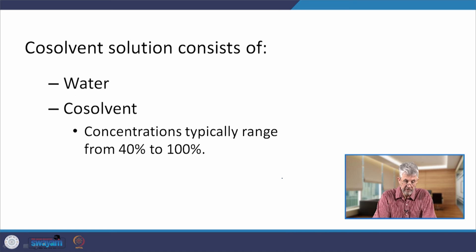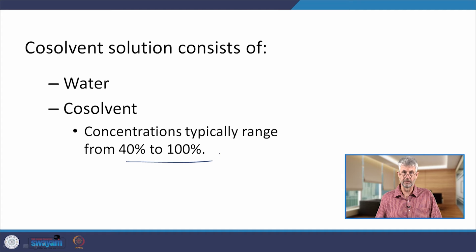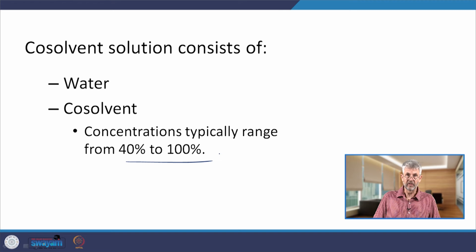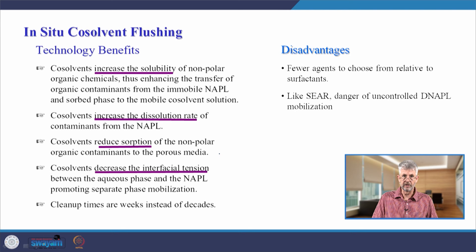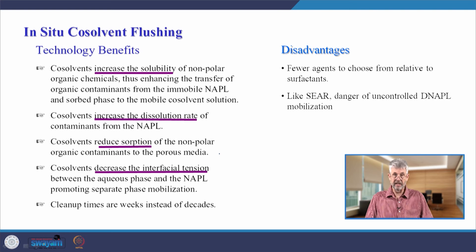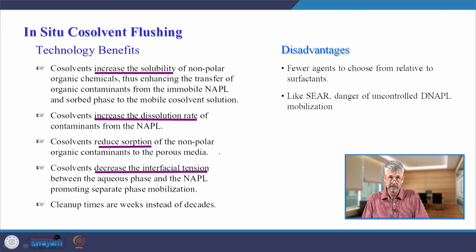A co-solvent solution typically consists of water and a co-solvent at concentrations ranging from 40 to 100 percent — 100 percent would be pure ethanol or pure isopropyl alcohol. Depending on the site and the speed required for cleanup, you can increase the co-solvency effect by increasing the co-solvent concentration. This yields an increase in solubility and dissolution rate, reduces sorption of NAPLs and other non-polar compounds from the soil into the solution, and the decrease in interfacial tension leads to emulsion formation and speeds up NAPL cleanup.